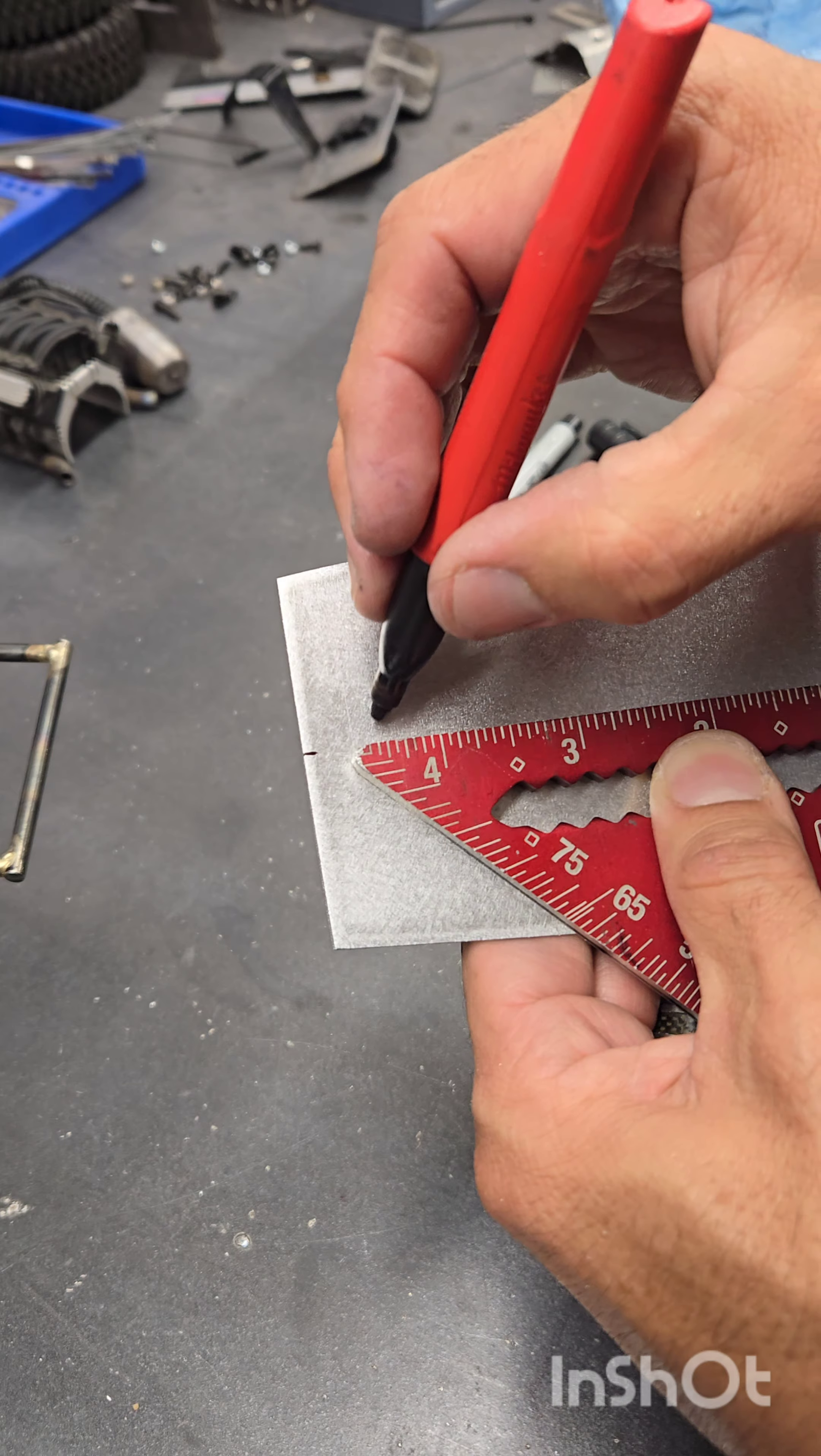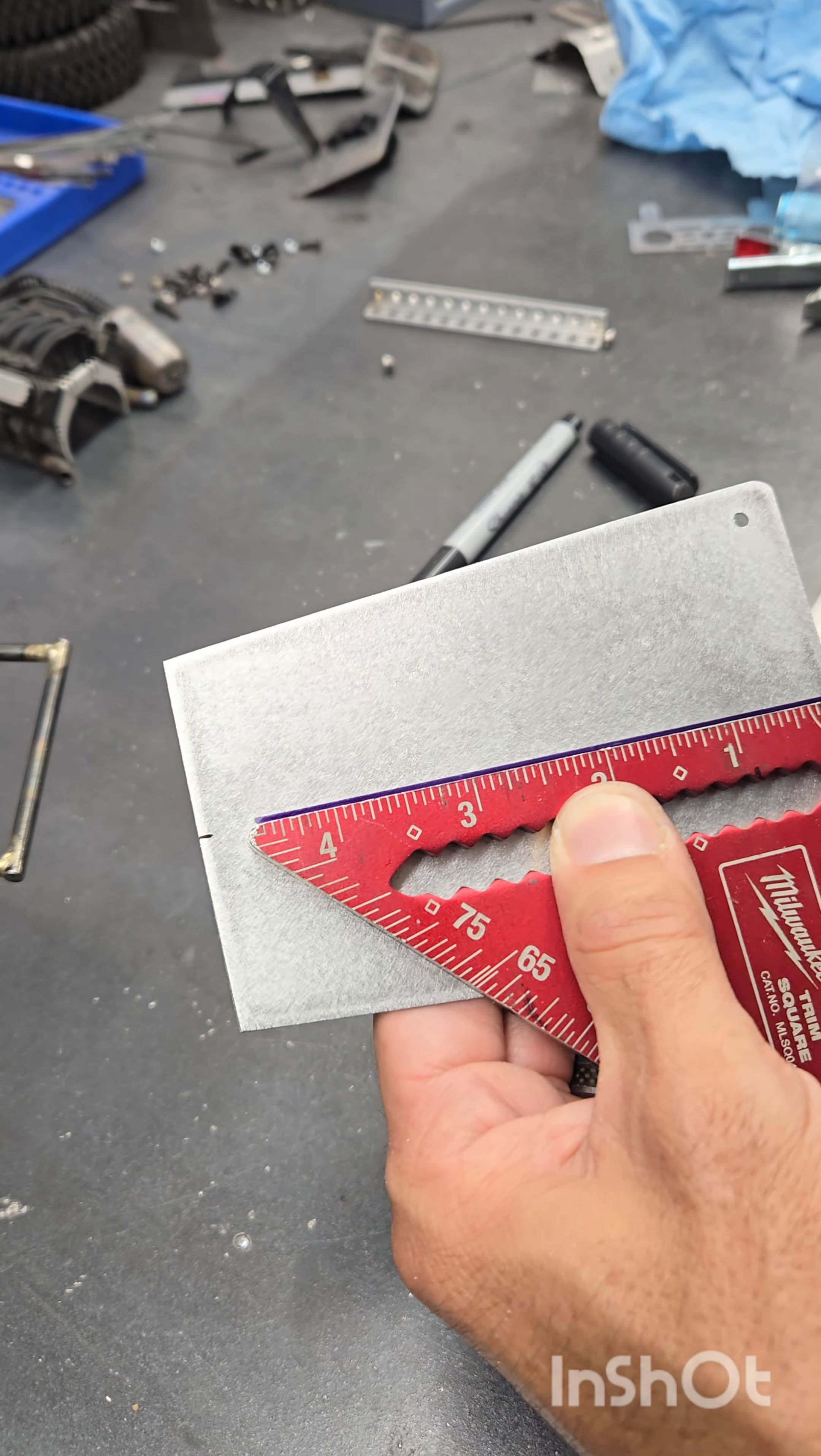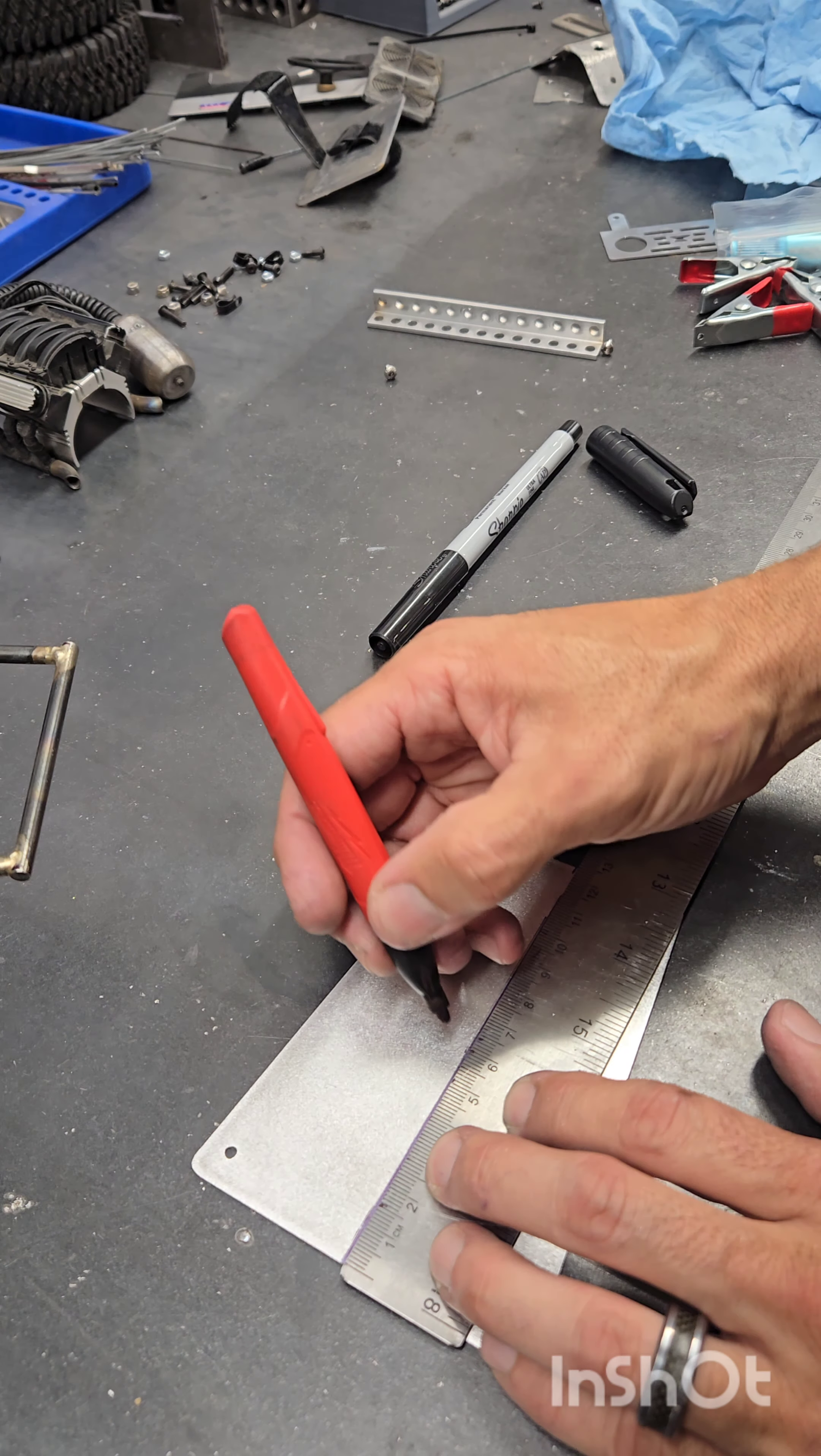They have these mini squares, and these are pretty handy. I use them a lot in the shop just to make sure things are square and symmetrical.